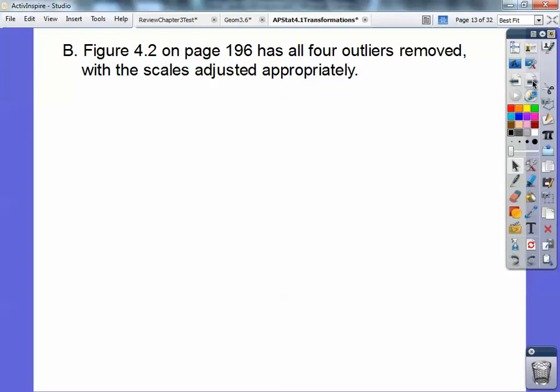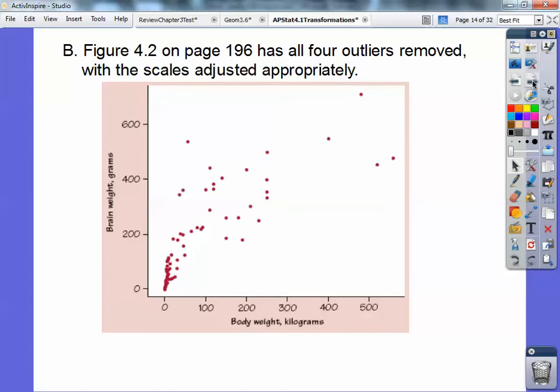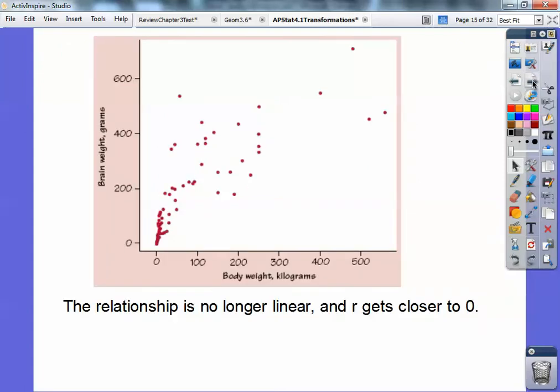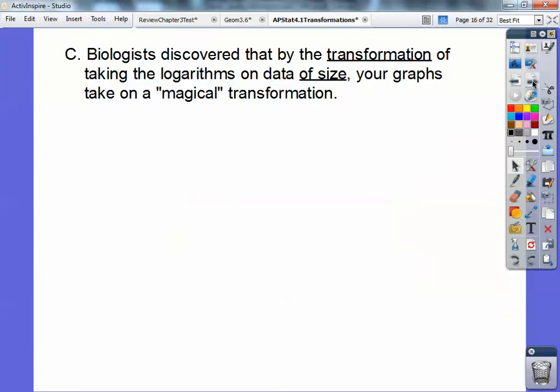Figure 4.2 on page 196 has all four outliers removed with the scale adjusted appropriately. Here it is right there. Look at that. What would you say if you saw that scatter plot? I would say it's not very strong, wouldn't you? It would not be a very good linear relationship right there. This relationship is not linear and R is getting closer to 0.